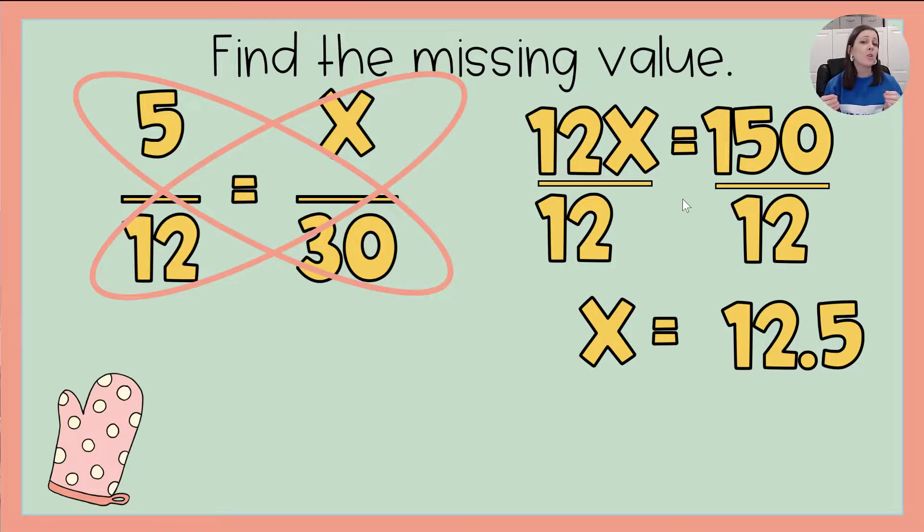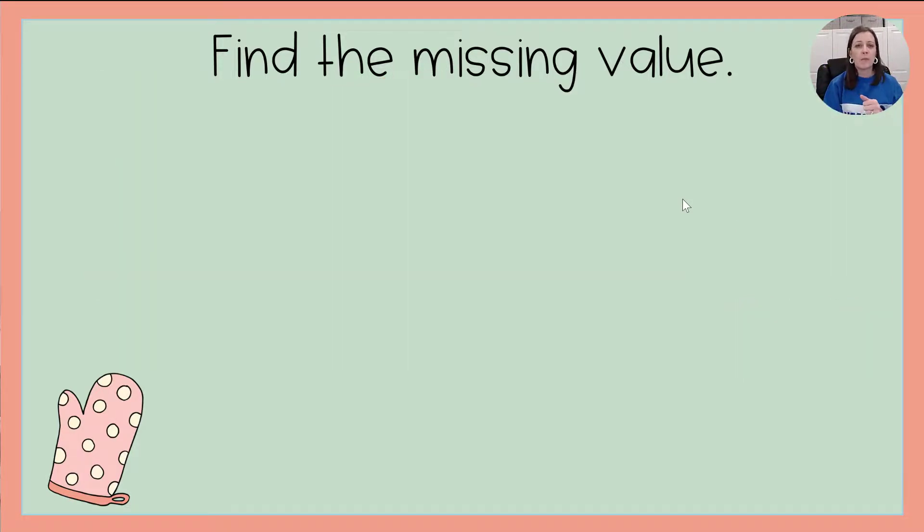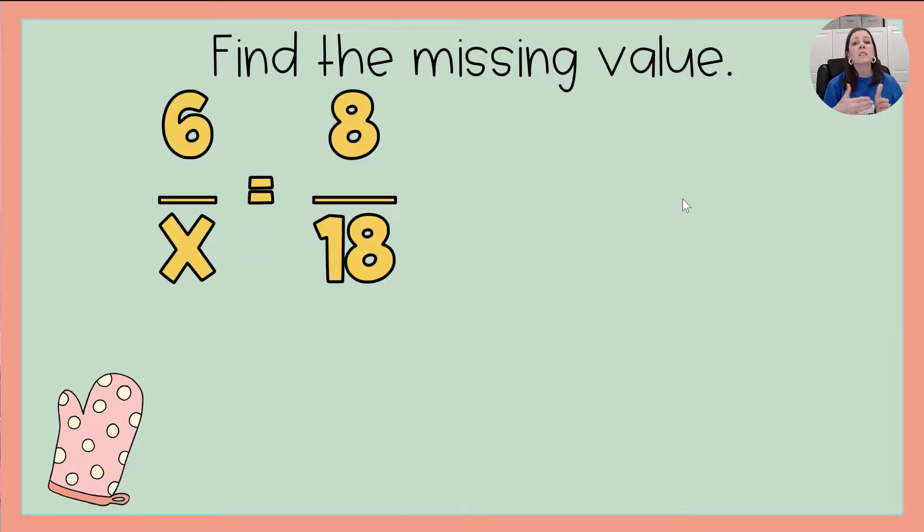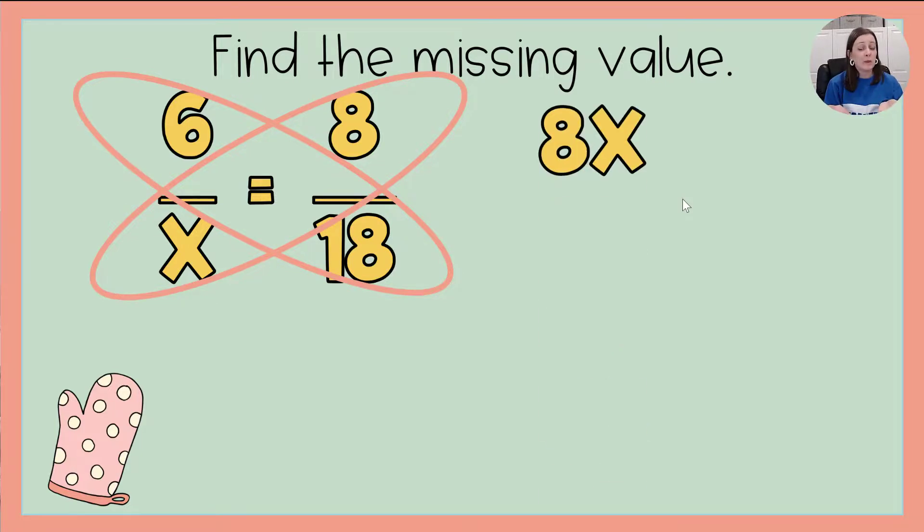I can now use the cross multiplication method that we just talked about to check my work on that. Let's go ahead and try another example. This time I've got 6 to x and 8 to 18. Yes, the x has moved, but it doesn't change how I solved this. I'm still going to use that cross multiplication method. So 8 times x is simply 8x, because I don't know the value of the x yet, and that is equal to the product of 6 and 18. So what is 6 times 18? 108.